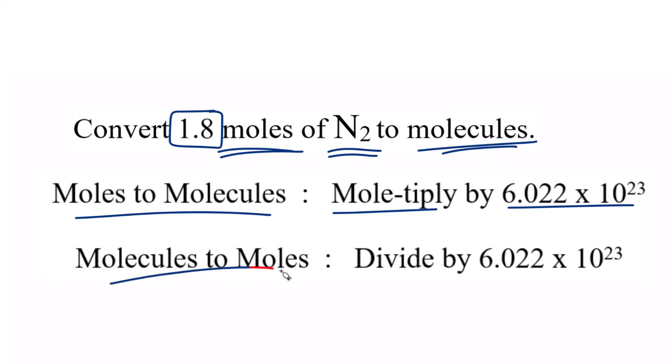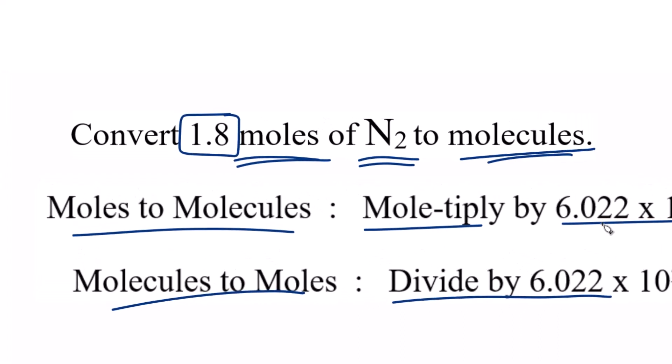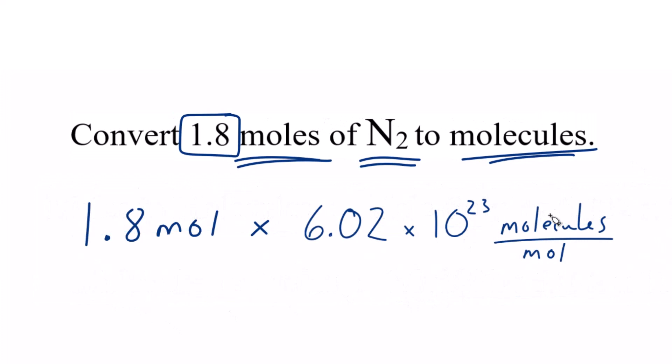If we were going from molecules to moles, we'd just do the opposite. We'd divide by Avogadro's number. So let's do that. 1.8 moles times Avogadro's number. And note that Avogadro's number, that's 6.02 times 10 to the 23rd molecules in one mole.